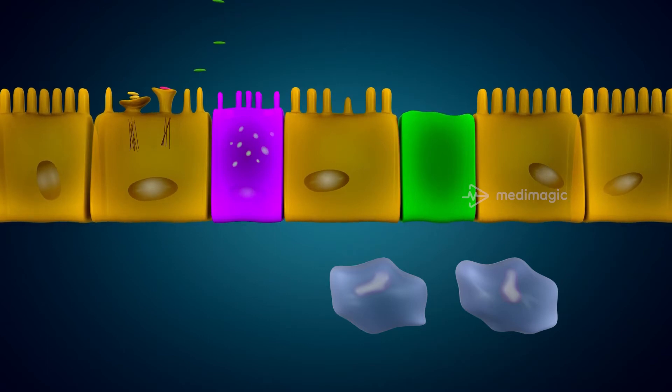Enteroaggregative E. coli or EAEC binds to the goblet cells which secrete mucus. This mucus forms biofilms on the intestinal mucosa to which the bacteria adhere to each other as well as to the cell surface to form an aggregative adherence pattern known as stacked brick.